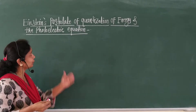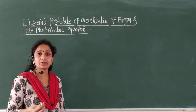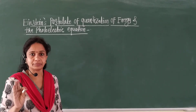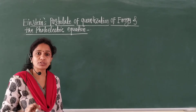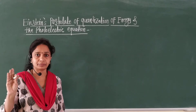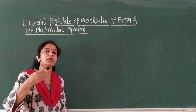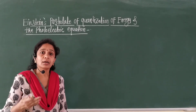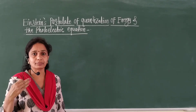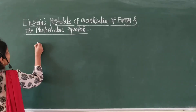To explain Einstein's postulate of quantization of energy, Einstein used Planck's quantum theory. He proposed that light behaves as a particle and its energy is released or absorbed in bundles of quanta. He named that particle as photons.